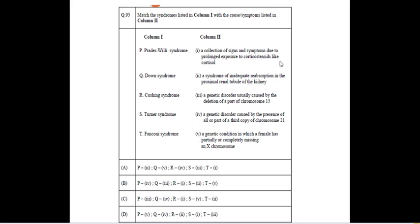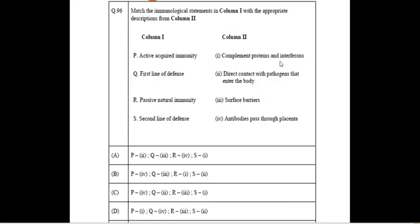Turner syndrome is a genetic condition where a female will be having a partial or completely missing X chromosome. Fanconi syndrome is a syndrome where there is inadequate reabsorption in proximal renal tubule of kidney. The proximal renal tubule of kidney will not be reabsorbing the nutrient from the kidney and sending back to blood. Instead for those persons, the nutrient will be excreted through urine or it will be excreted as waste.